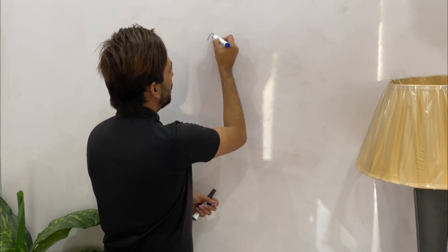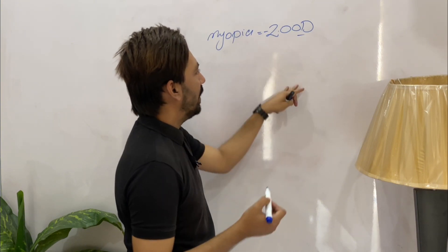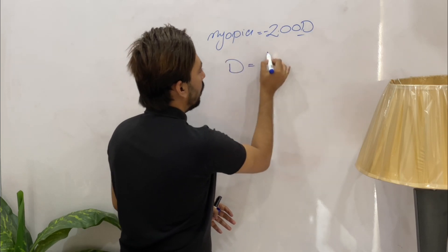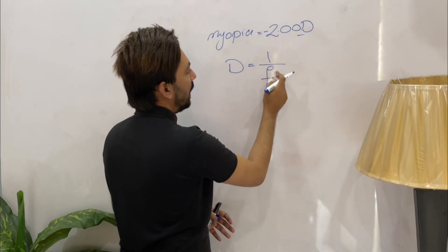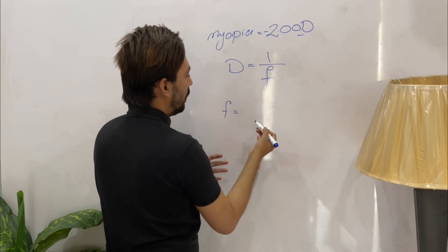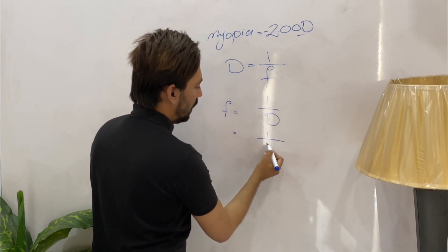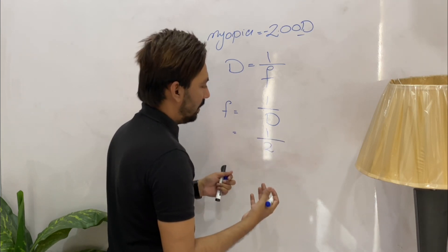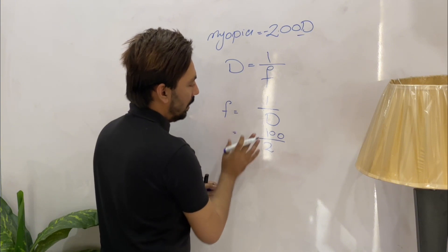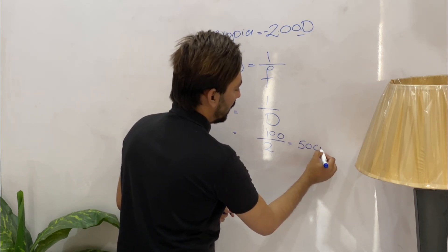For example, we have a patient with myopia of minus two diopters. The far point of this myope can be found using the formula D = 1/f, where D is the diopteric value and f is the focal length or distance. To find the distance in centimeters: f = 100/D = 100/2 = 50 centimeters. So a myopic patient with minus two diopters has a far point at 50 centimeters.